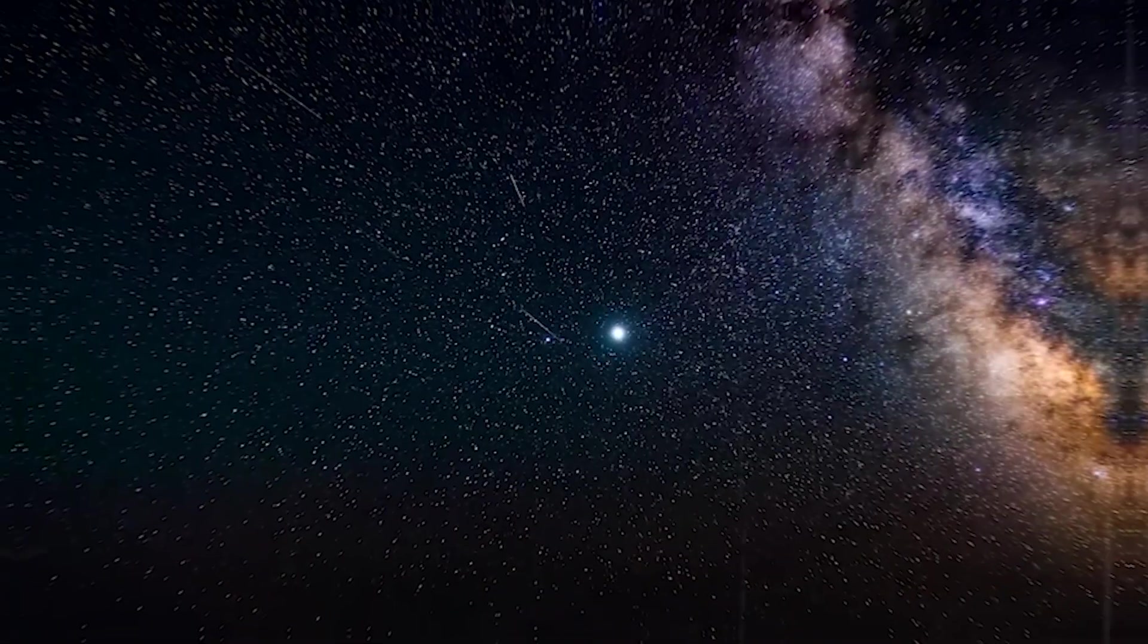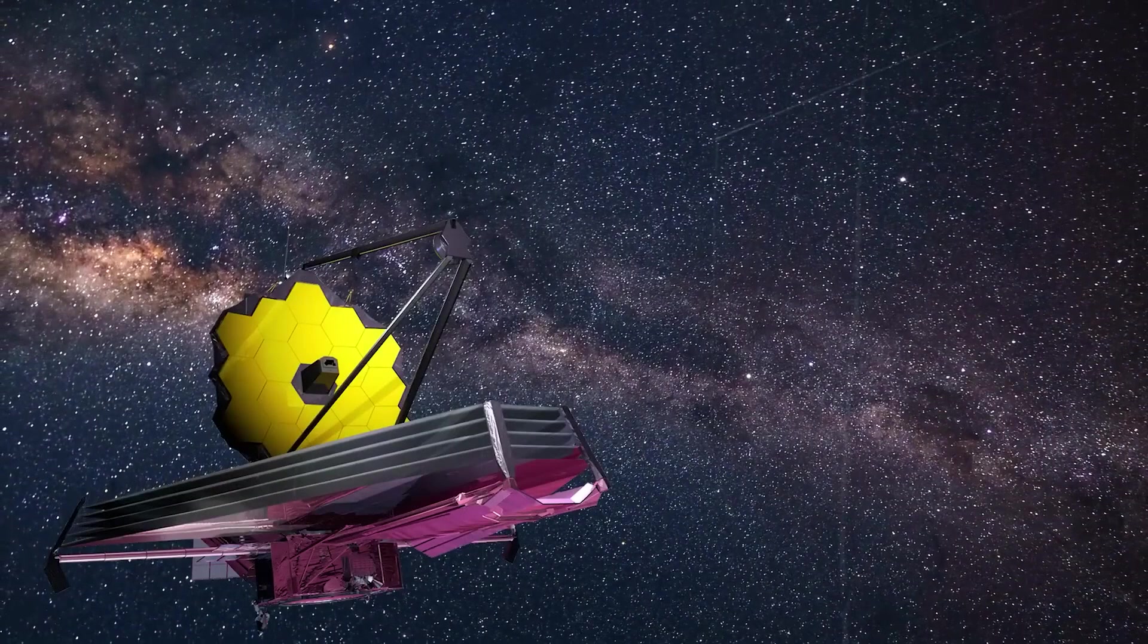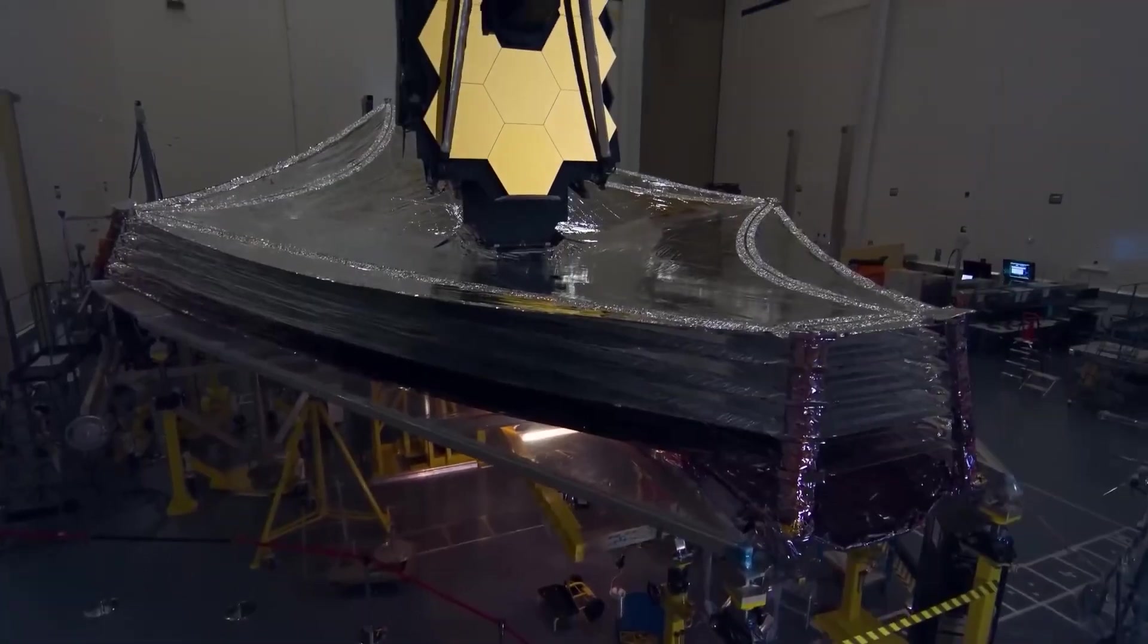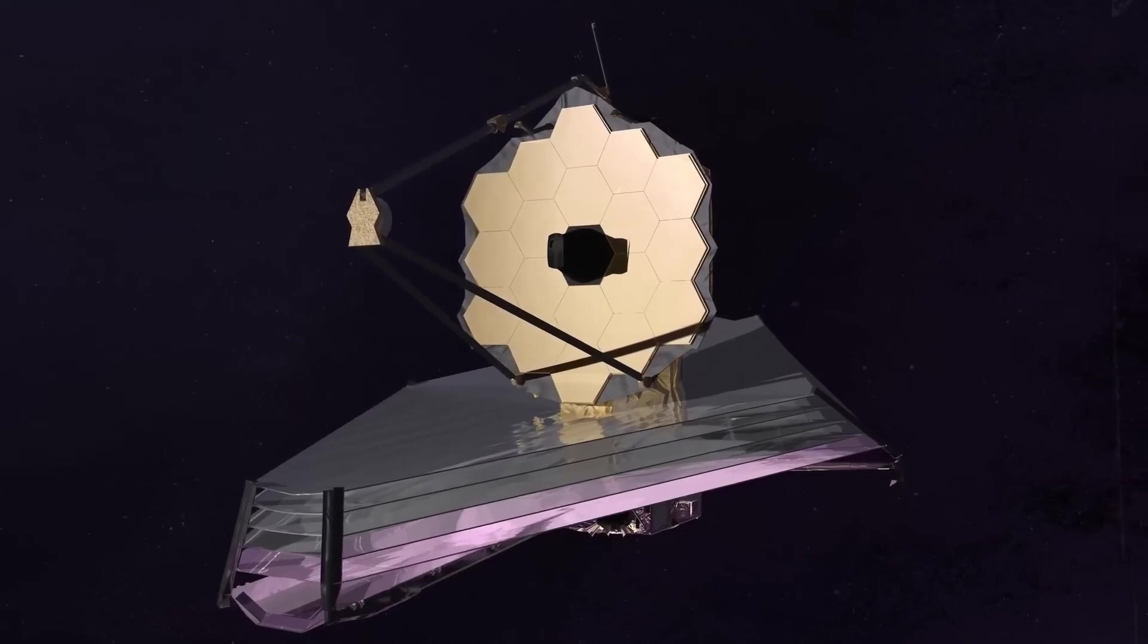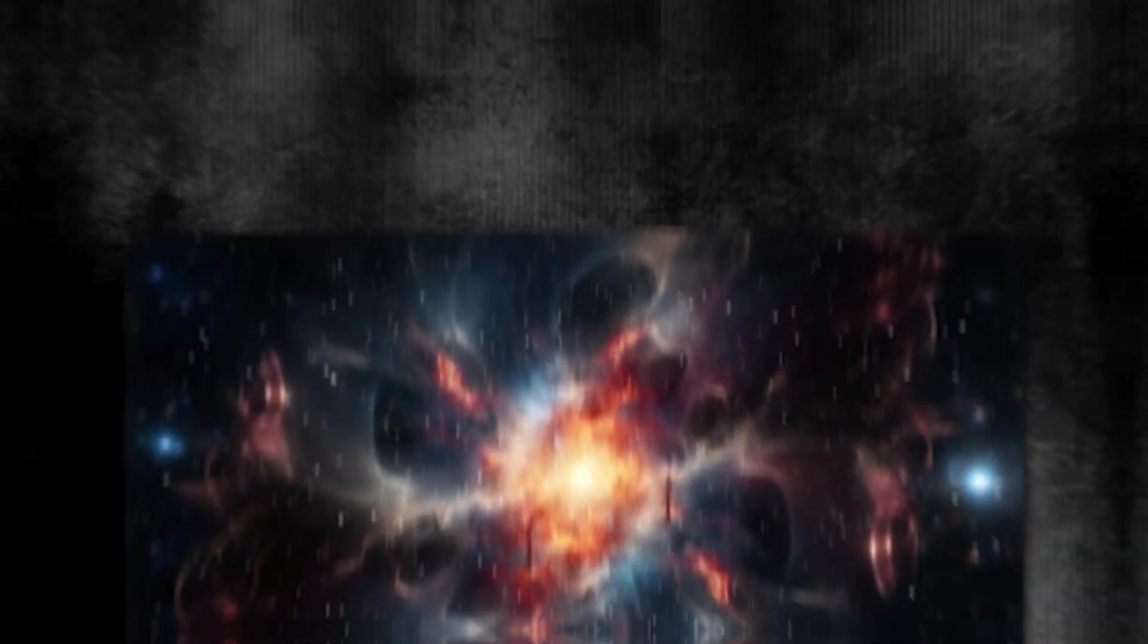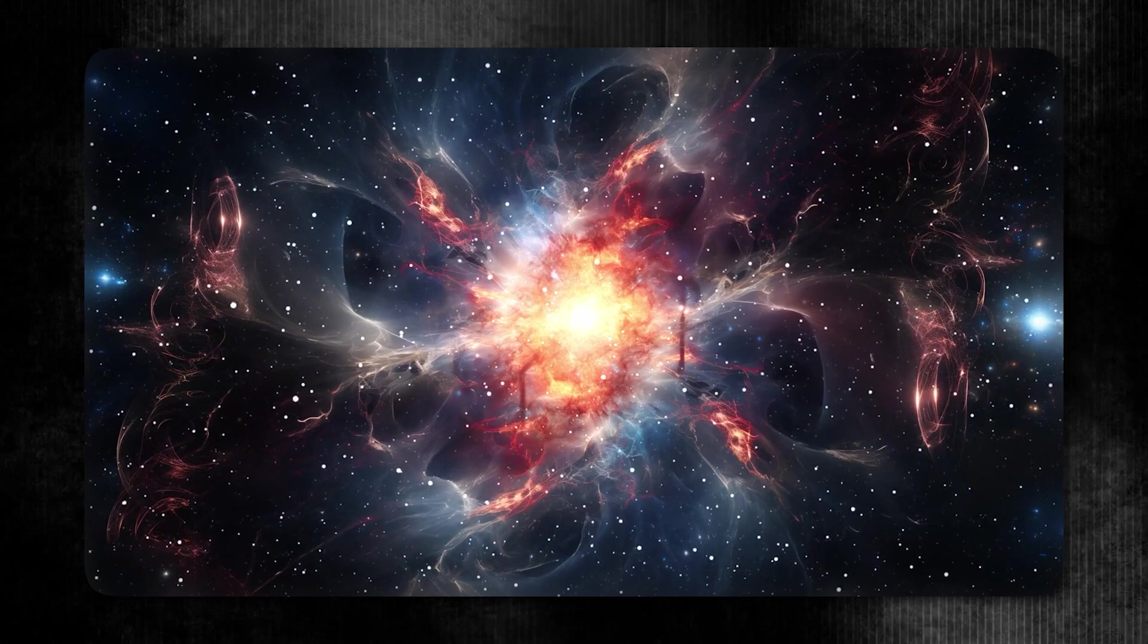While the James Webb Space Telescope is often compared to Hubble, their capabilities complement rather than compete with each other. Hubble excels in visible light observation, while JWST focuses on the infrared spectrum. Together, they form a powerful partnership, advancing our understanding of the cosmos.